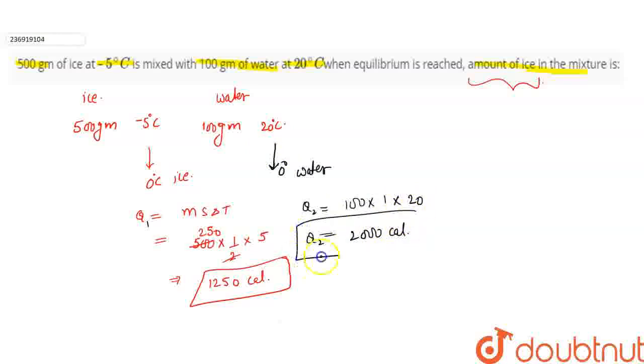So Q2 value is 2000 calories. If this water becomes 0 degree water, its temperature reaches 0 degrees, then it will release 2000 calories of energy.